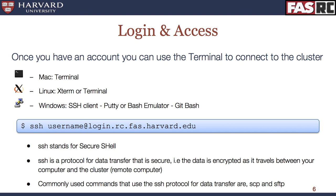To log in, you will use the basic shell command called SSH, which stands for Secure Shell. This is a protocol for data transfer that is encrypted and secure. All you have to do is, in a bash command line interface, type in SSH, your username, and the address of the compute cluster you want to connect to. In this case, it is login.rc.fas.harvard.edu.